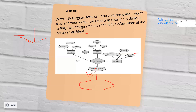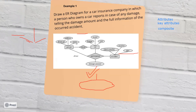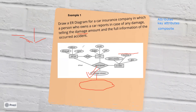Besides key attributes, we have other types. A composite attribute is one you can expand. For example, a person's name can be broken into first name and last name. Similarly, address can be expanded into city and postal code. These are expandable, composite attributes.